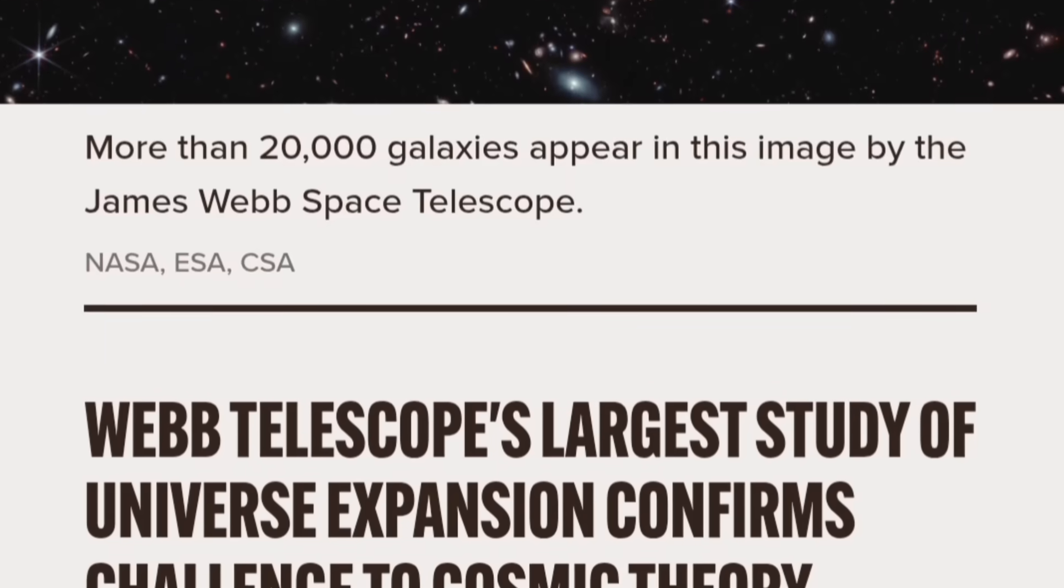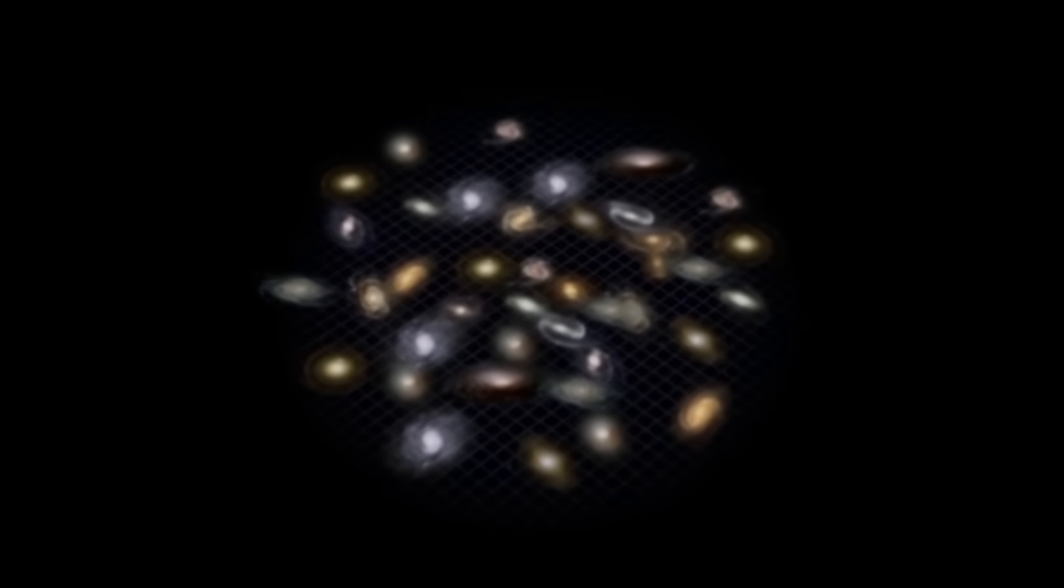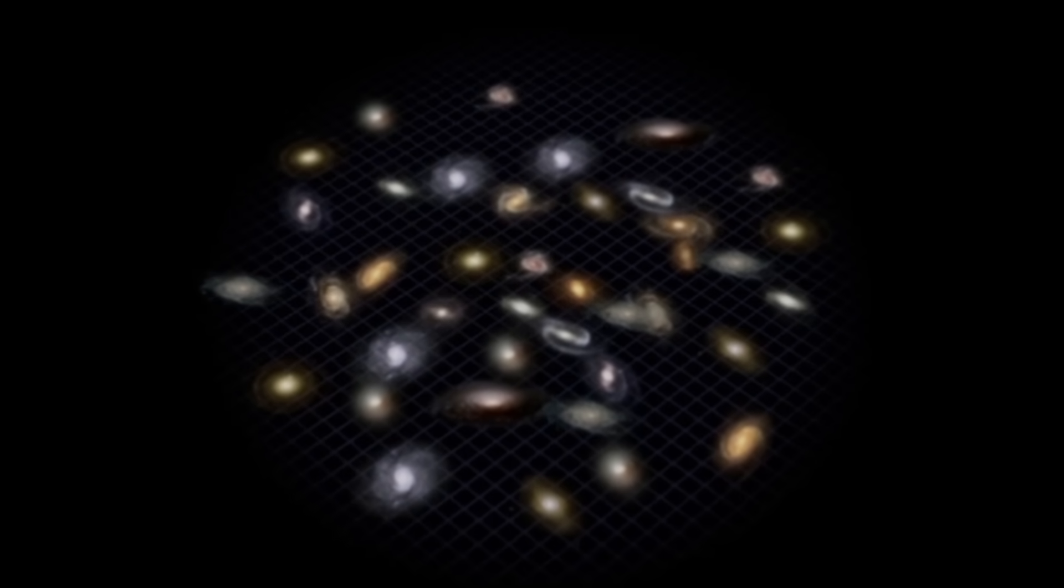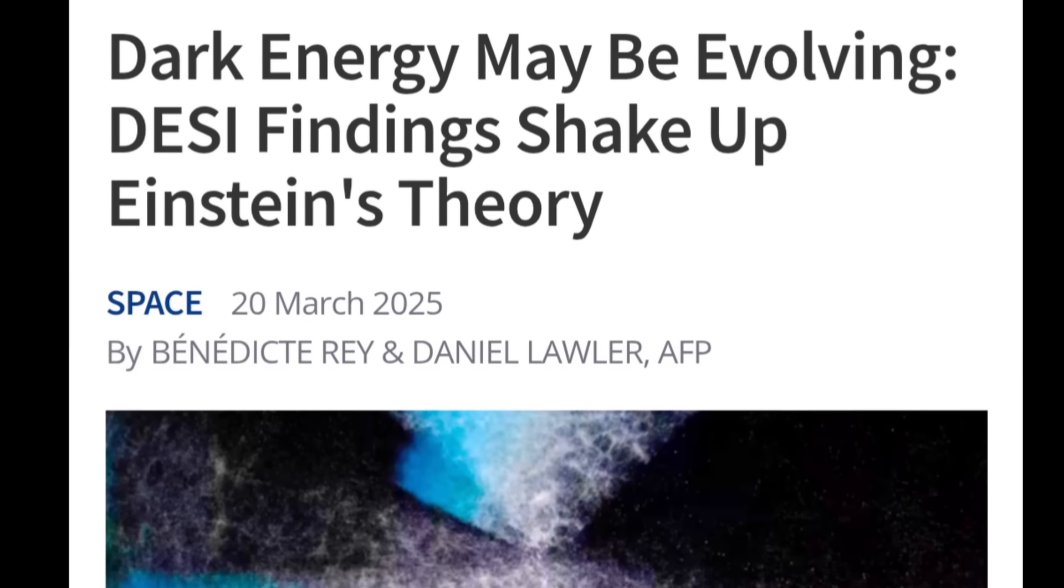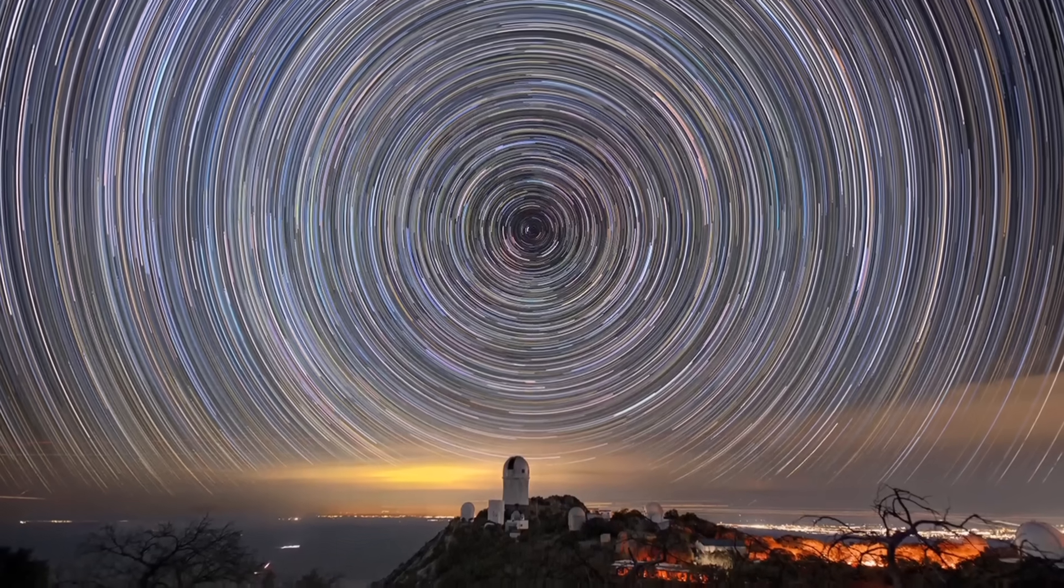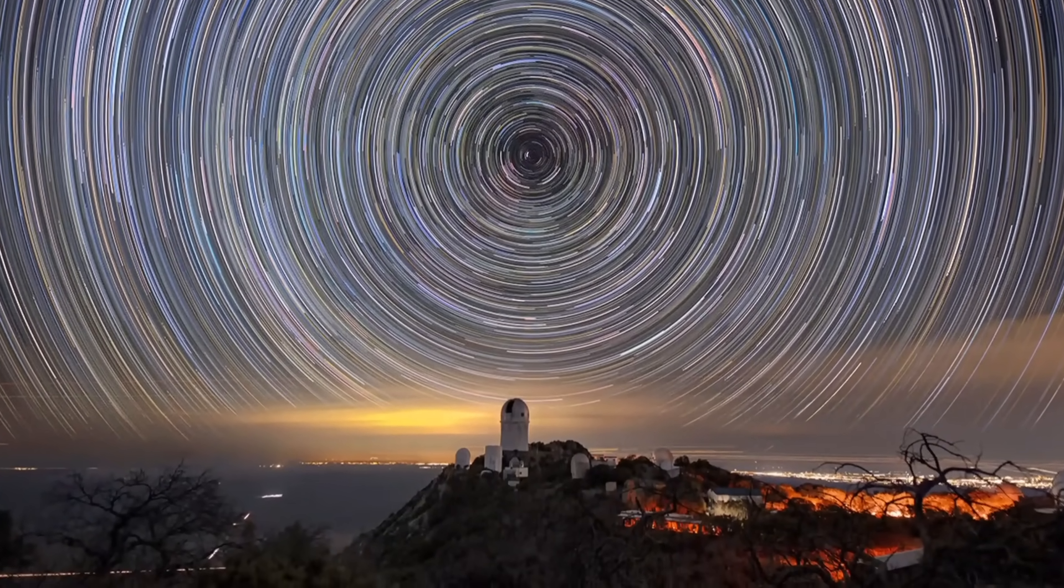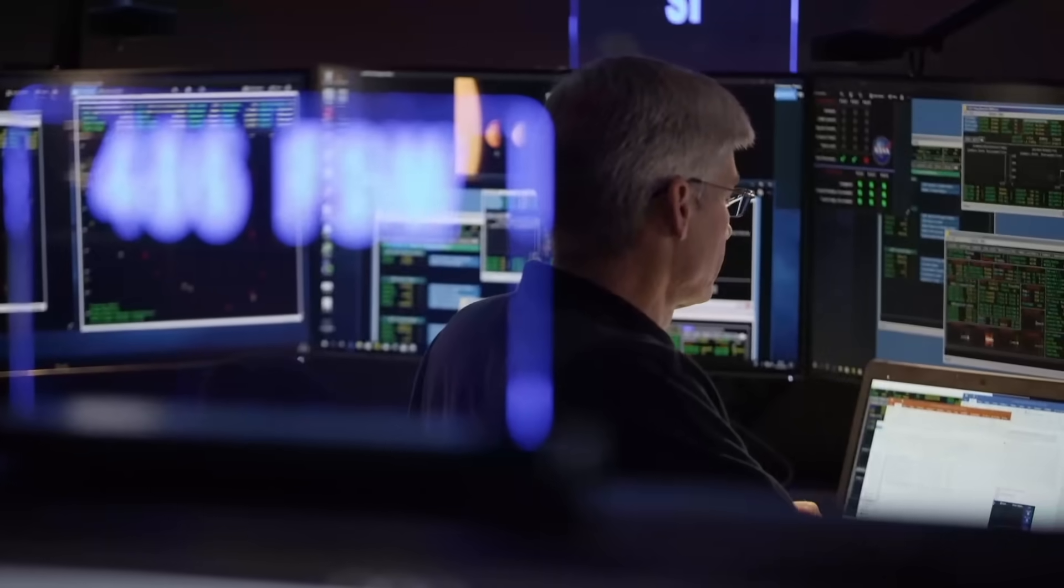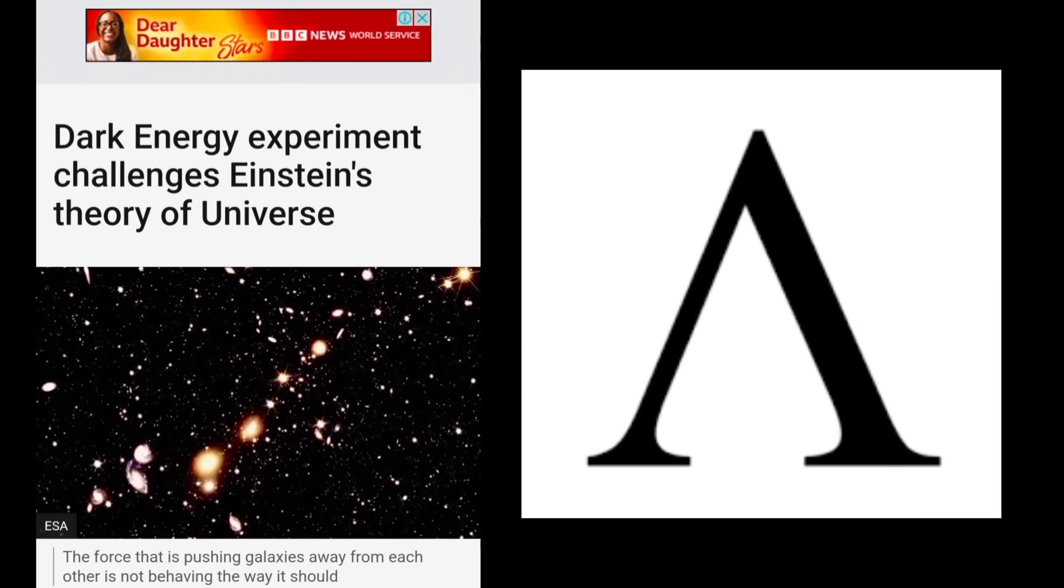Well, it's not just about galaxies existing far earlier than we expected. Scientists have also observed that the expansion rate of the universe isn't uniform. This suggests that the mysterious dark energy, believed to be driving the universe's expansion, is actually evolving and weakening over time. This discovery challenges one of the core assumptions of the standard cosmological model, that dark energy is constant. In fact, it even proves Einstein wrong on one key idea: that the expansion rate, or the cosmological constant, is truly constant.